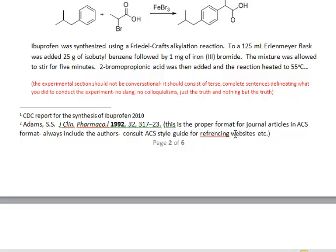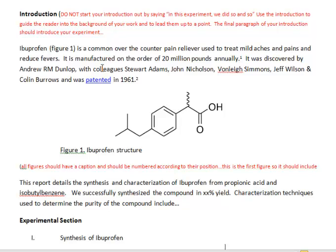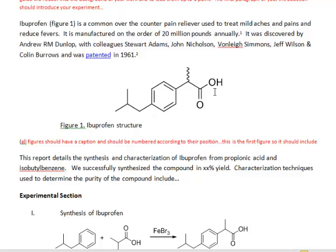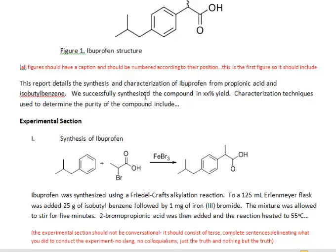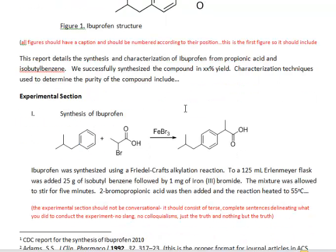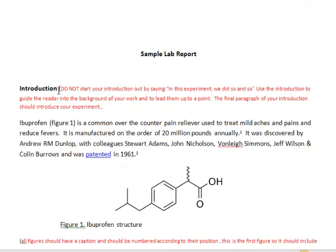This sample lab report is already on Blackboard — you can use it as a format. The first paragraph is your introduction, discussing different facts about aspirin. You also need a reaction scheme. In the second paragraph of your introduction, talk about what you did: say 'in this experiment we synthesized aspirin and obtained aspirin in X percent yield,' and then describe how you characterized aspirin — using TLC, pH testing, melting point, and so on. That covers the introduction and the experimental section.